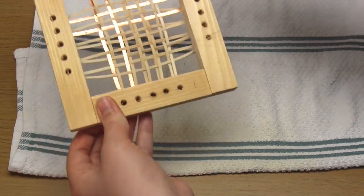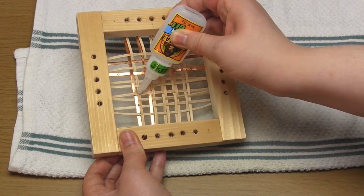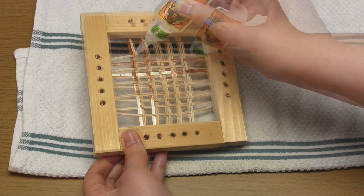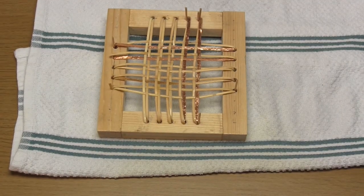Once you're happy with your weaving just turn it over and apply super glue to the underside, just to keep the pieces in position. I personally use some Gorilla super glue. Then leave it to dry.